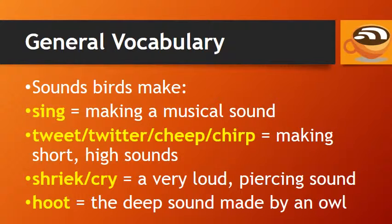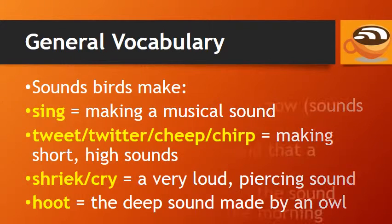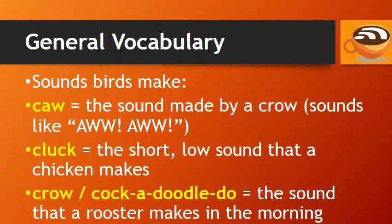Shriek and cry are used for a very loud, piercing sound made by a bird. And hoot refers to the deep sound made by an owl. Caw refers to the sound made by a crow — it sounds like aww, aww.